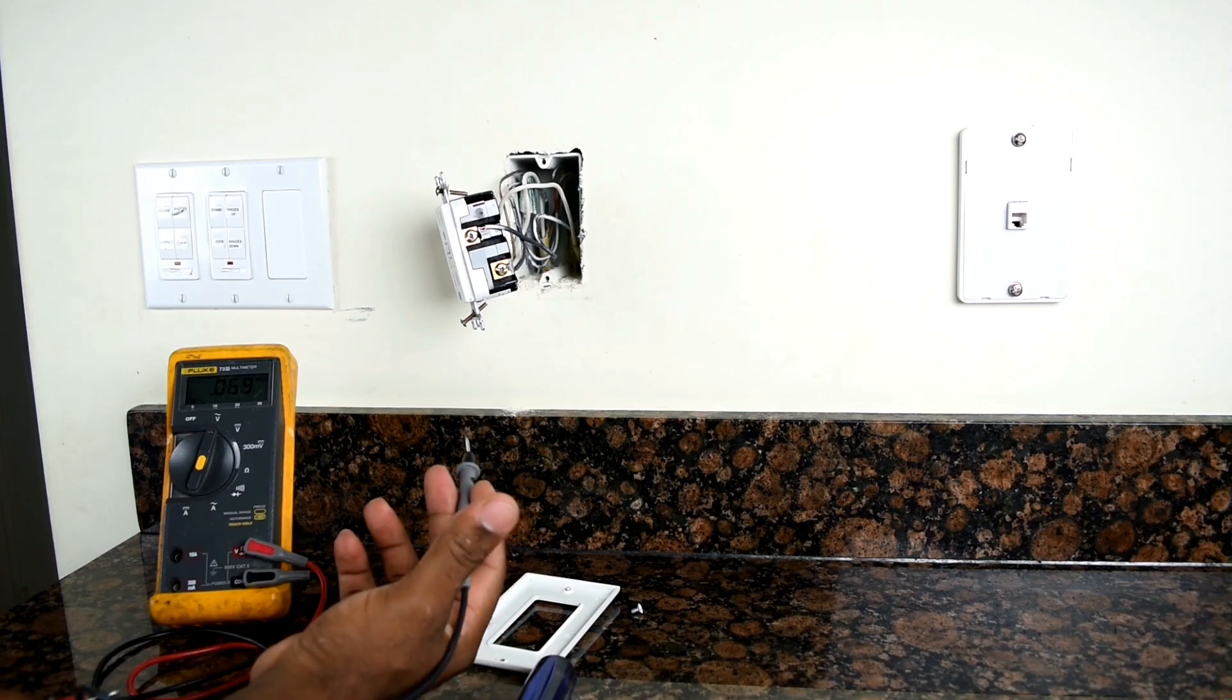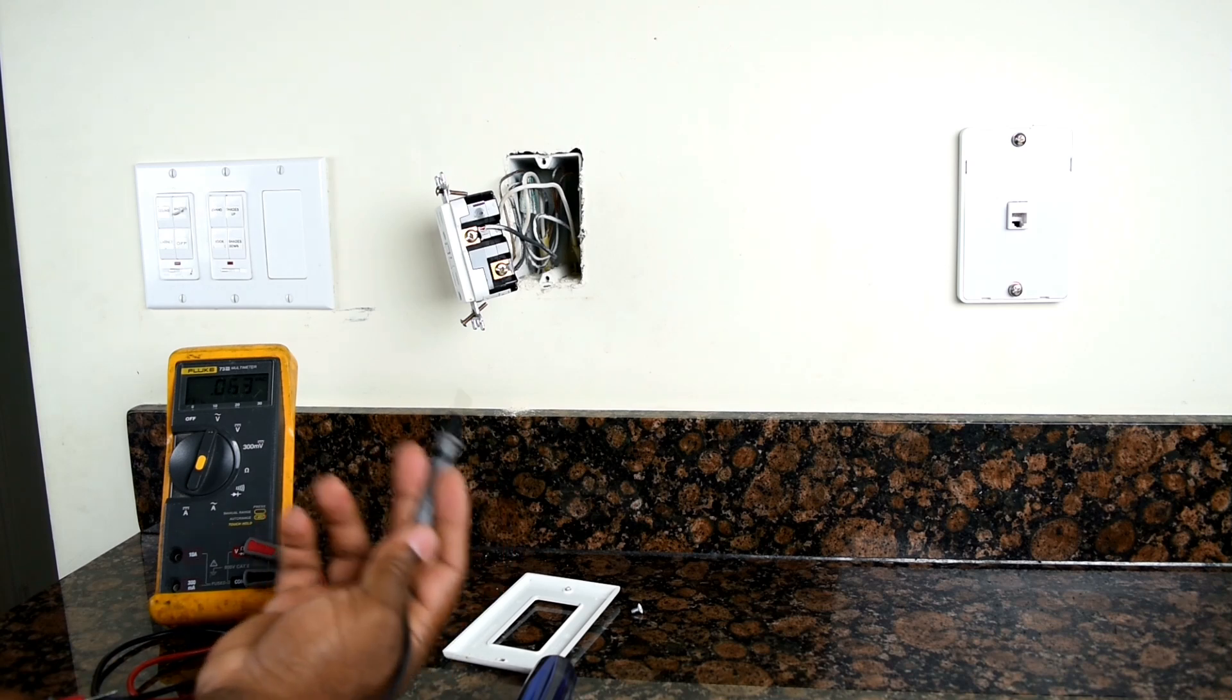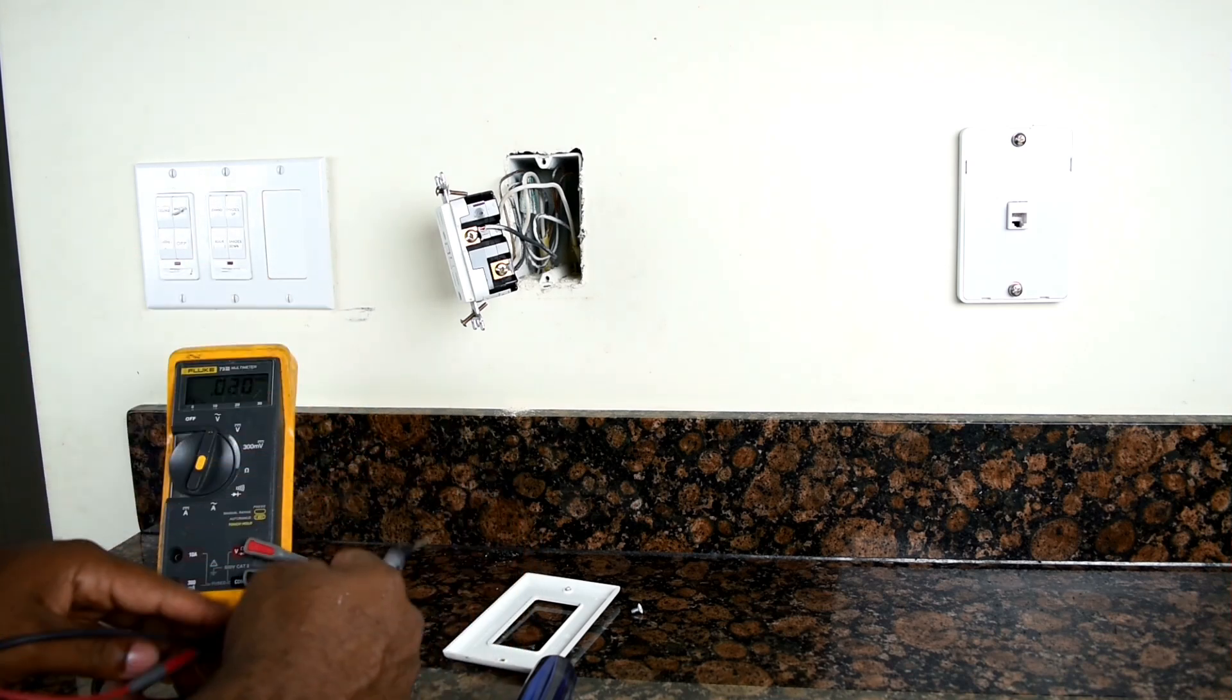I did turn off the breaker, but there was also another breaker in the kitchen that says kitchen outlet, so I turned that off as well and that did the trick.